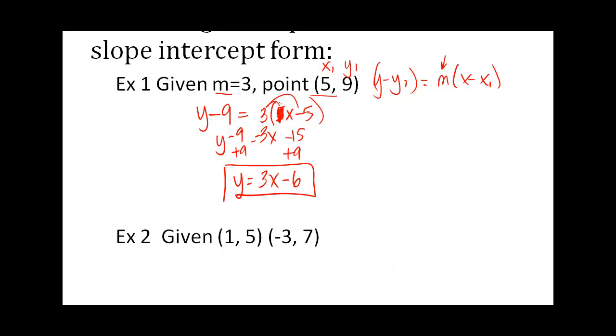Second example. In this point, I'm not given a slope. I'm only given two points. So I have to calculate slope first. So here are my points: x1, y1, x2, y2. y2 is 7, minus y1 is 5. x2 is negative 3, minus x1 is 1. So what I have is 6 over negative 4, which reduces to negative 1 half.